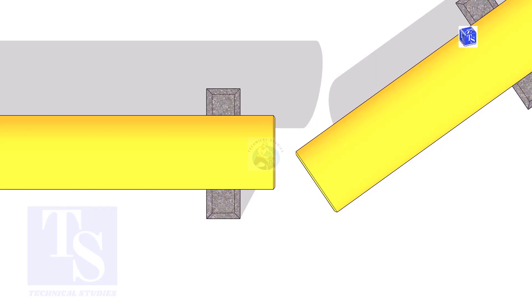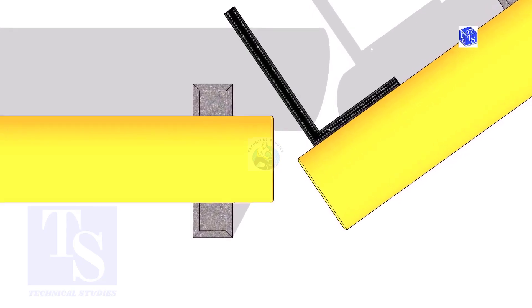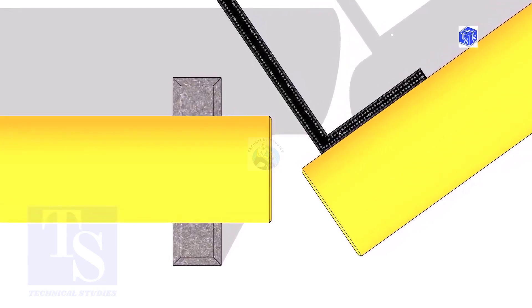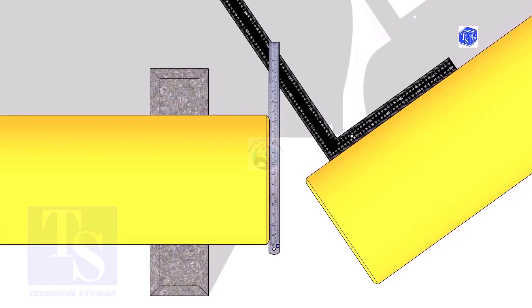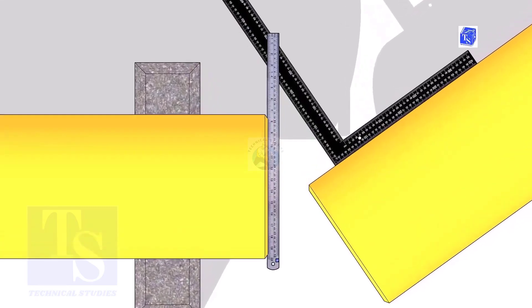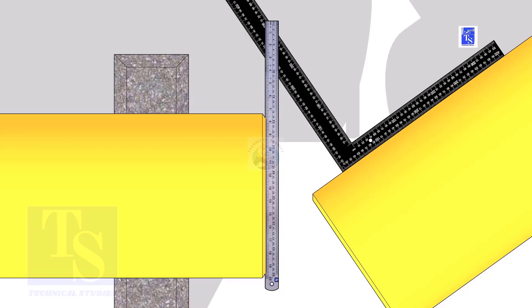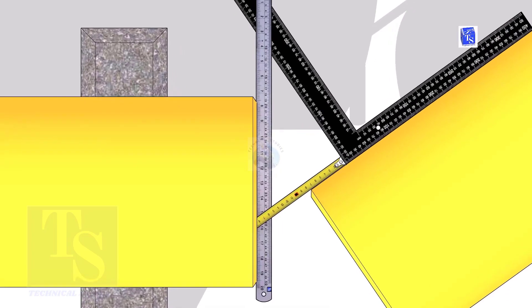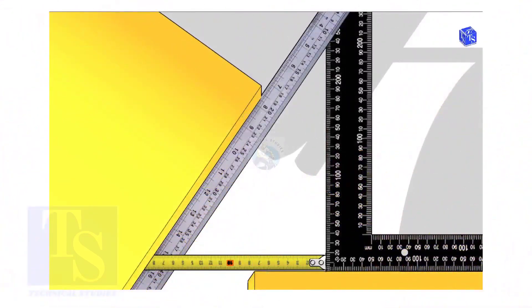Hold a right angle on the pipe as shown. Hold a scale on the other pipe as shown. Measure and note down the dimensions of the triangle.